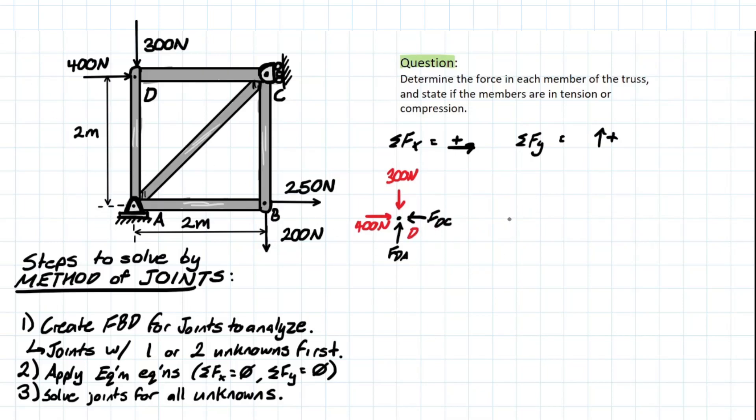So that's joint D. The first thing we'll do is solve for the x component, which is FDC. So we take our equilibrium equations. Summation of Fx is equal to zero. And we have 400 newtons, which is positive, and then we have negative FDC. Solving that, FDC is going to equal 400 newtons.